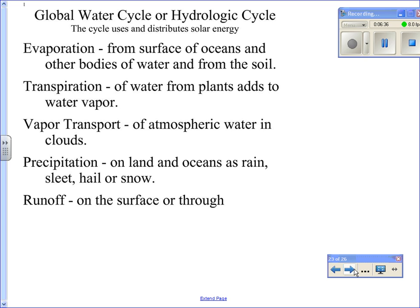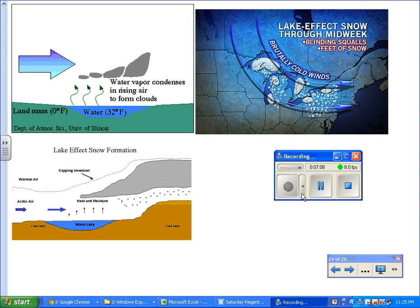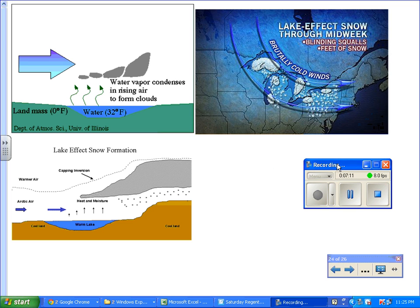Here's the definition: evaporation from the surface of oceans and other bodies of water and from the soil. Transpiration of water from plants adds to water vapor. Vapor transport of atmospheric water and clouds. Precipitation on land and oceans as rain, sleet, hail, or snow. Then you have runoff on the surface or through. Now, another topic that's been asked recently is the whole idea of lake effect snow.